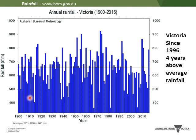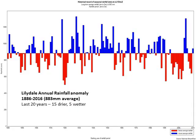Looking at the long-term rainfall record — this is Victoria's rainfall from all weather stations back to 1900. You can see rainfall goes up and down with a lot of variability; average doesn't happen that often. You'll also notice that in the last 20 years we've had about four years above the long-term average and 16 below. We'll talk about what's behind these wetter years like last year, and also what's going on with this dry pattern.